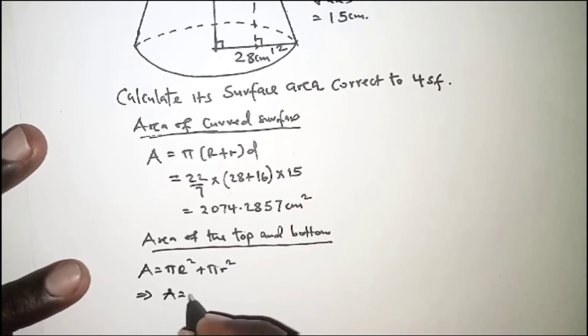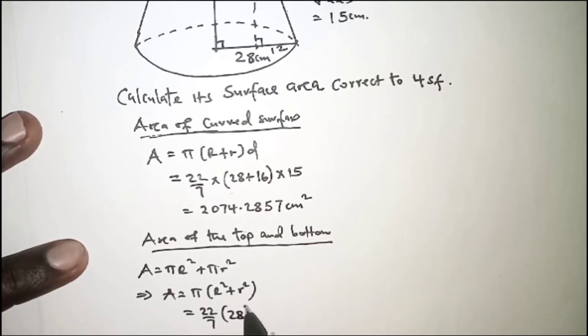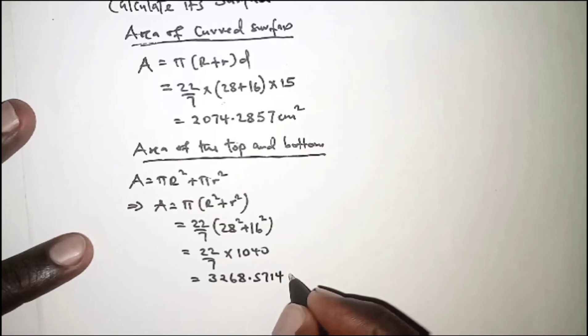Doing our substitution, we'll have 22 over 7 into 28 squared plus 16 squared. So that worked out should be 22 over 7 times 1040, and that is 3268.5714 square centimeters.